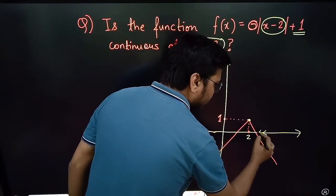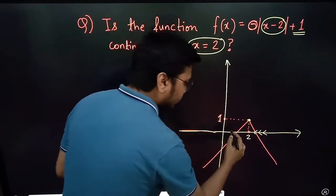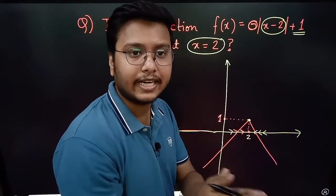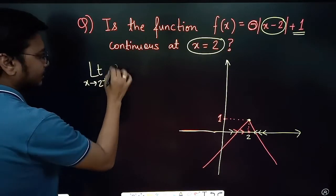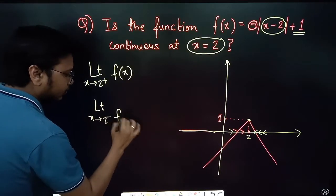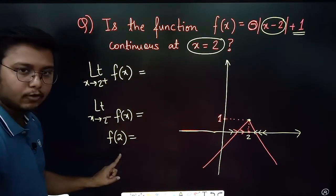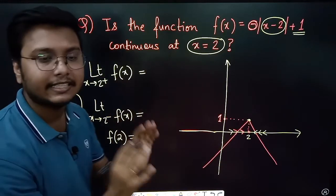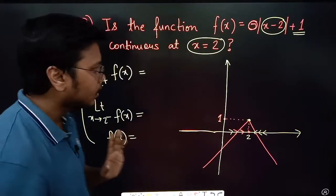Let's verify mathematically. I'll approach x = 2 from the right: limit x tending to 2⁺ of f(x), and from the left: limit x tending to 2⁻ of f(x), and also find f(2) directly. If all three values are the same, I can say f(x) is continuous at x = 2.